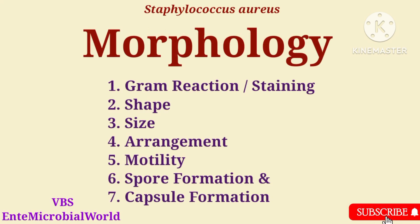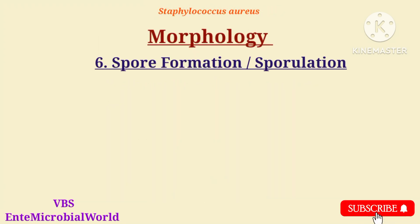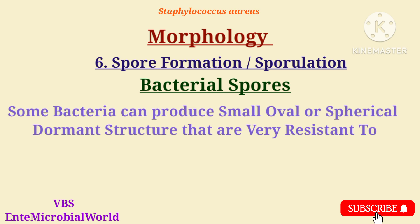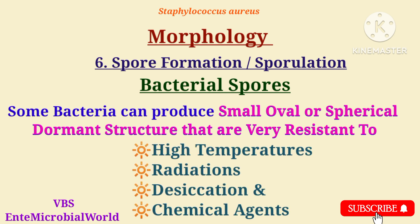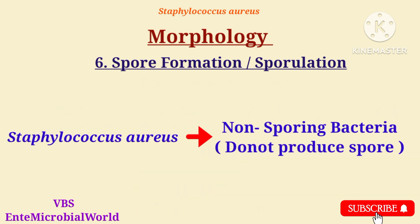Next, we are going to discuss spore formation or sporulation. Some bacteria can produce small, oval or spherical, dormant structures that are very resistant to high temperatures, radiation, desiccation, and chemical agents. Staphylococcus aureus does not produce spores; that is, it is a non-spore-forming bacterium.